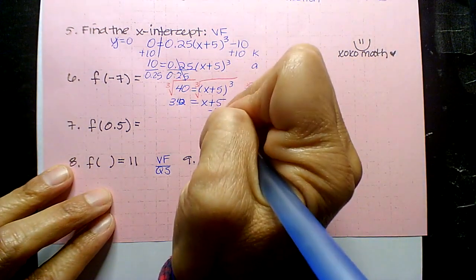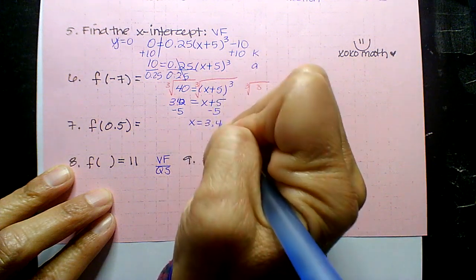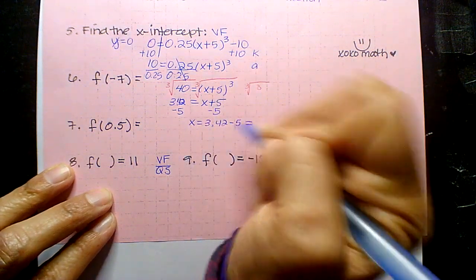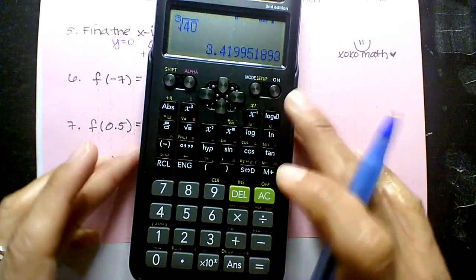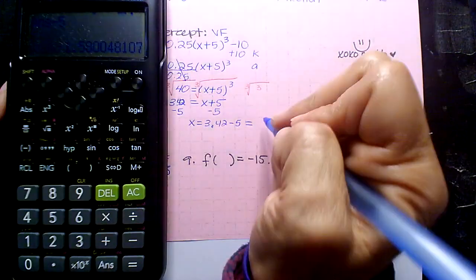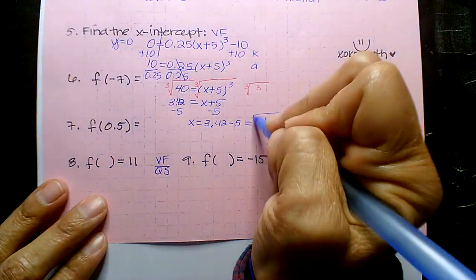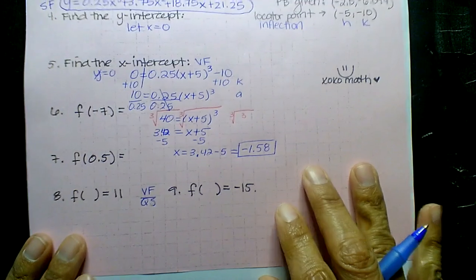Okay, and now you're going to subtract 5, and I get X is equal to 3.42 minus 5, which is, I could just minus 5 here. So here, I get negative 1.58, that is your X intercept.